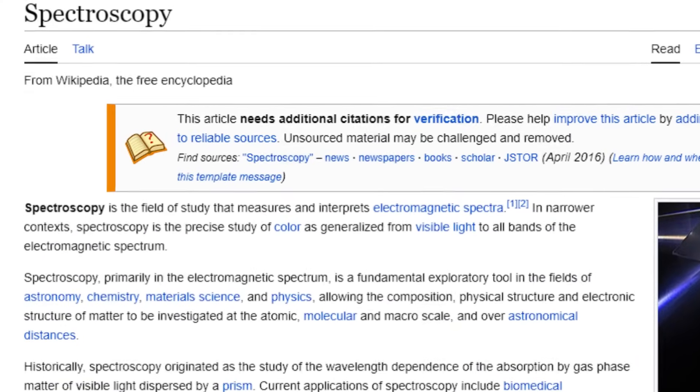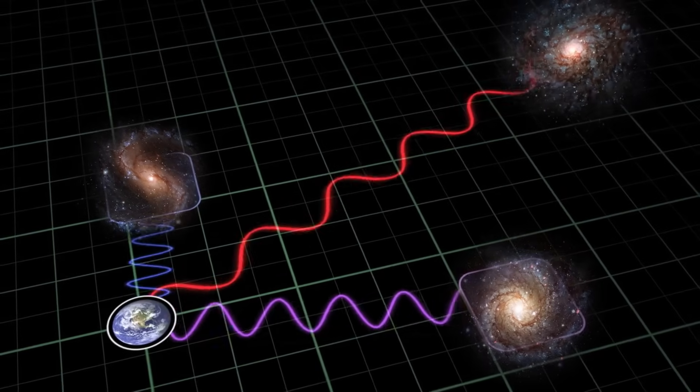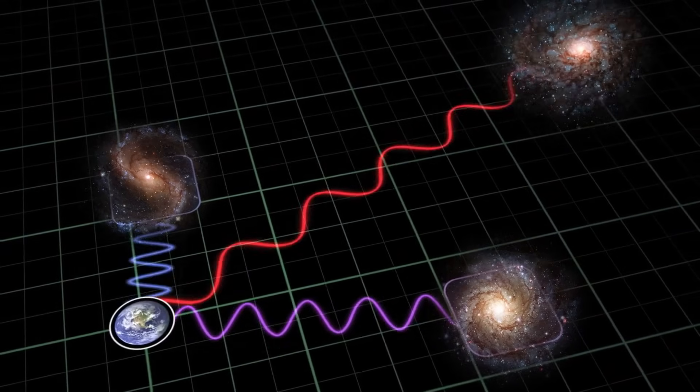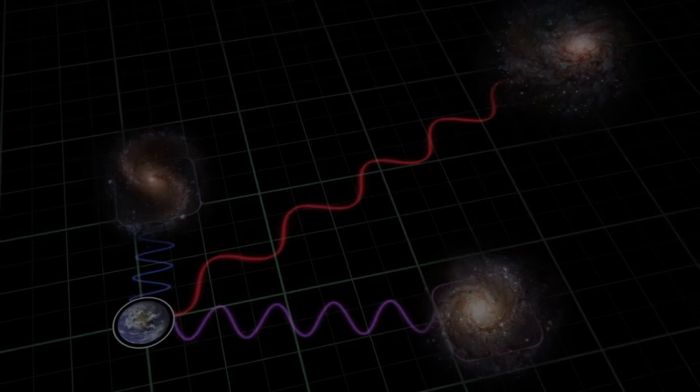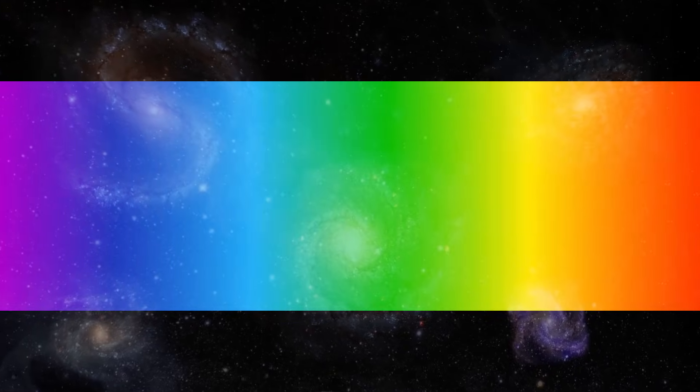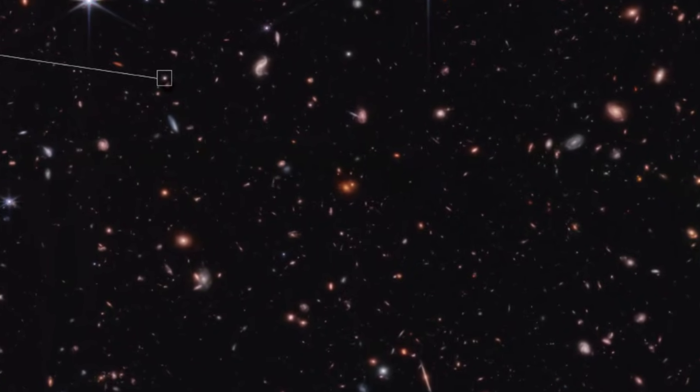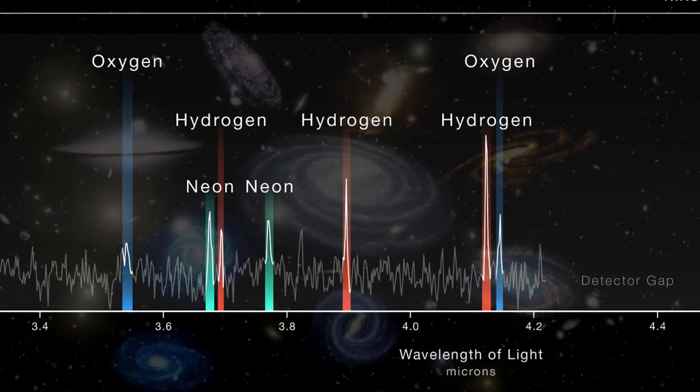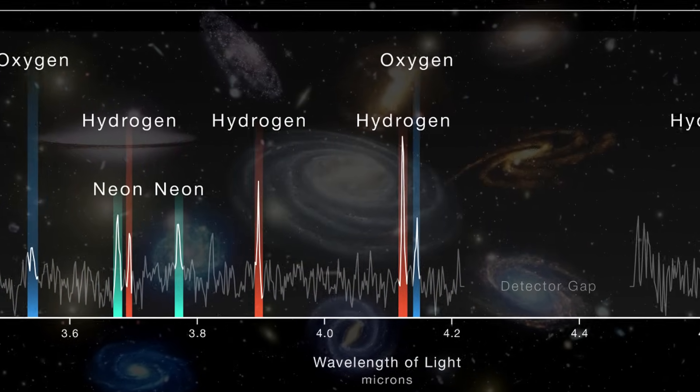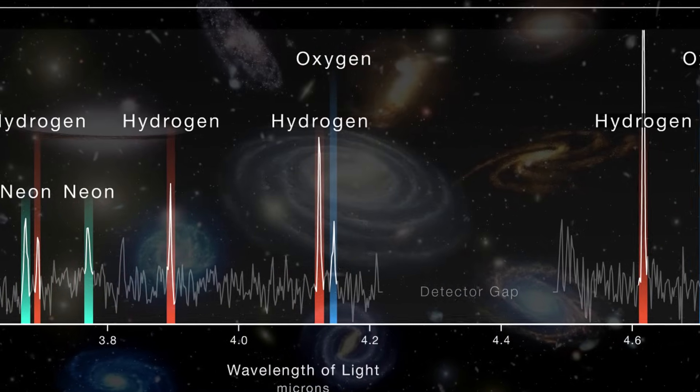To measure redshift for any object, we use spectroscopy, which is a very precise and accurate way of measuring redshift, but it also has some limitations. It requires a lot of time and light to obtain a high-quality spectrum, especially for very faint and distant galaxies. It also requires prior knowledge of the expected positions of the spectral lines, which may not be available for some types of galaxies.